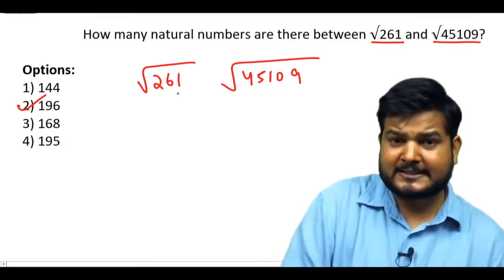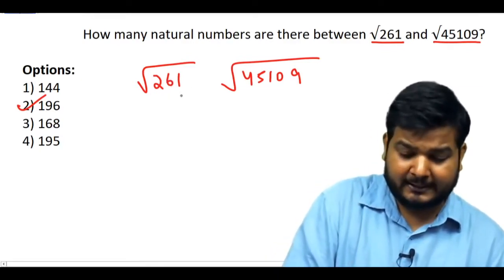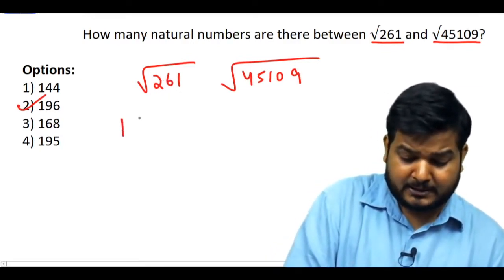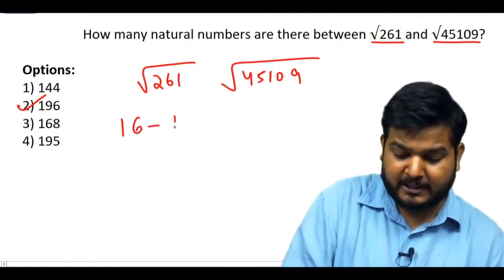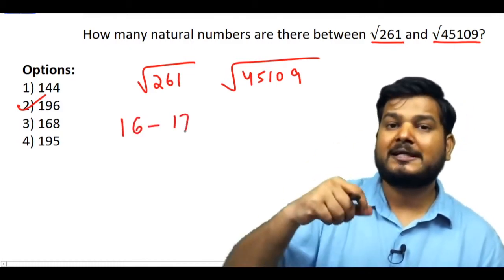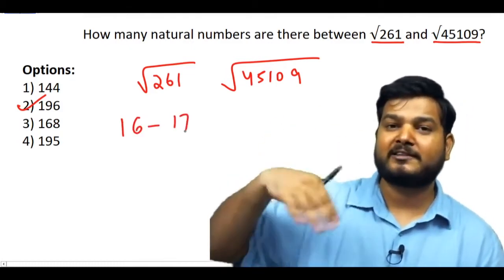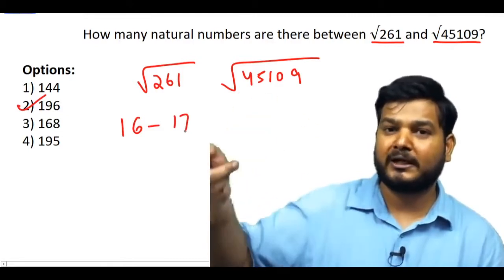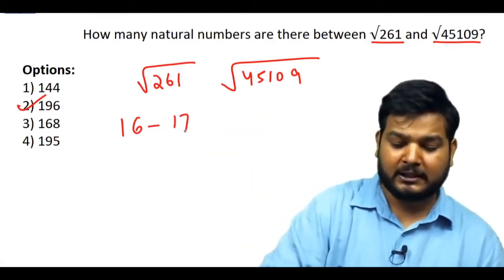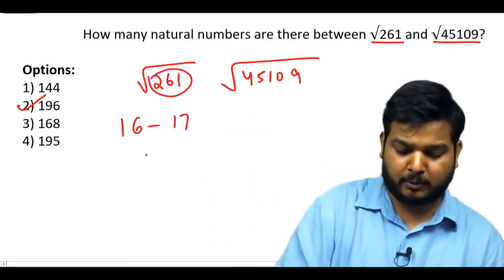Looking at 261, you will know that its square root lies between 16 and 17, because 16² = 256 and 17² = 289. So √261 is between 16 and 17.